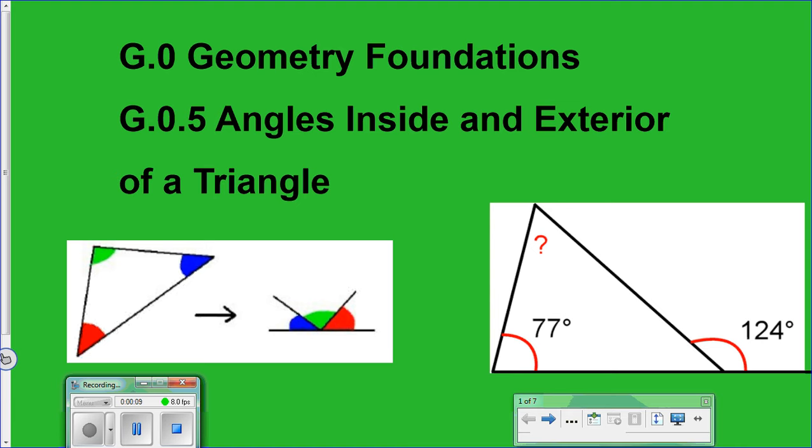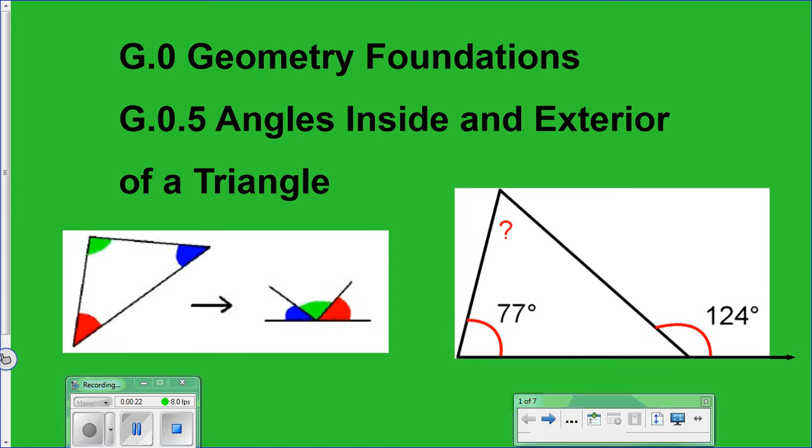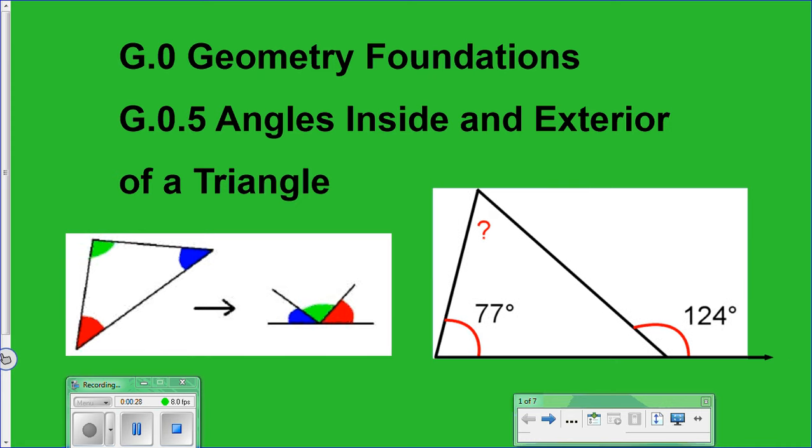I'm going to call it Angles Inside and Exterior of a Triangle. So if you look at these pictures, these give us a hint of what we're looking at here. The one on the left shows the colored angles - they're called the interior angles. And then over here, if you look at this triangle, that angle that's marked at 124 degrees is what we're going to be calling an exterior angle.